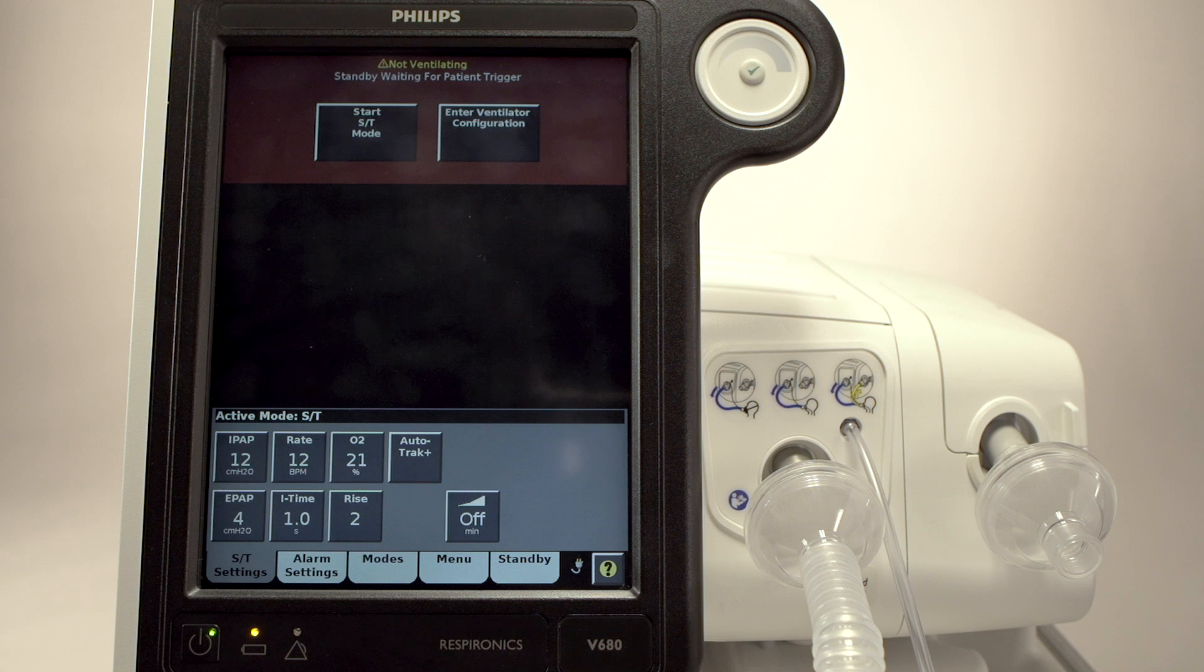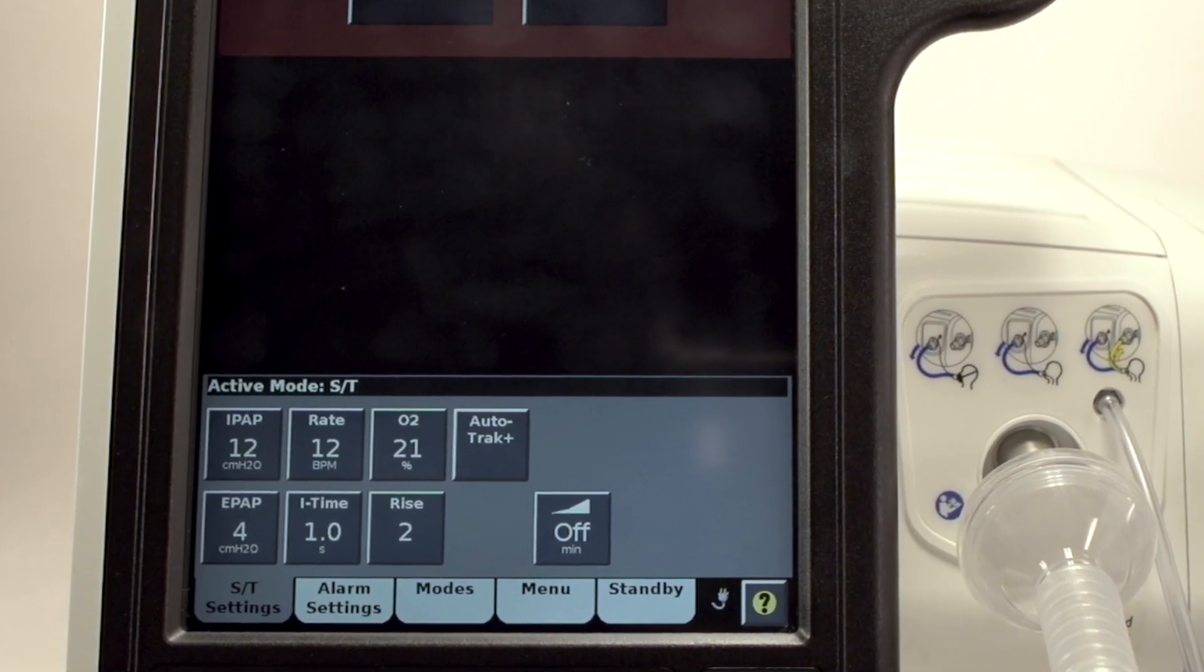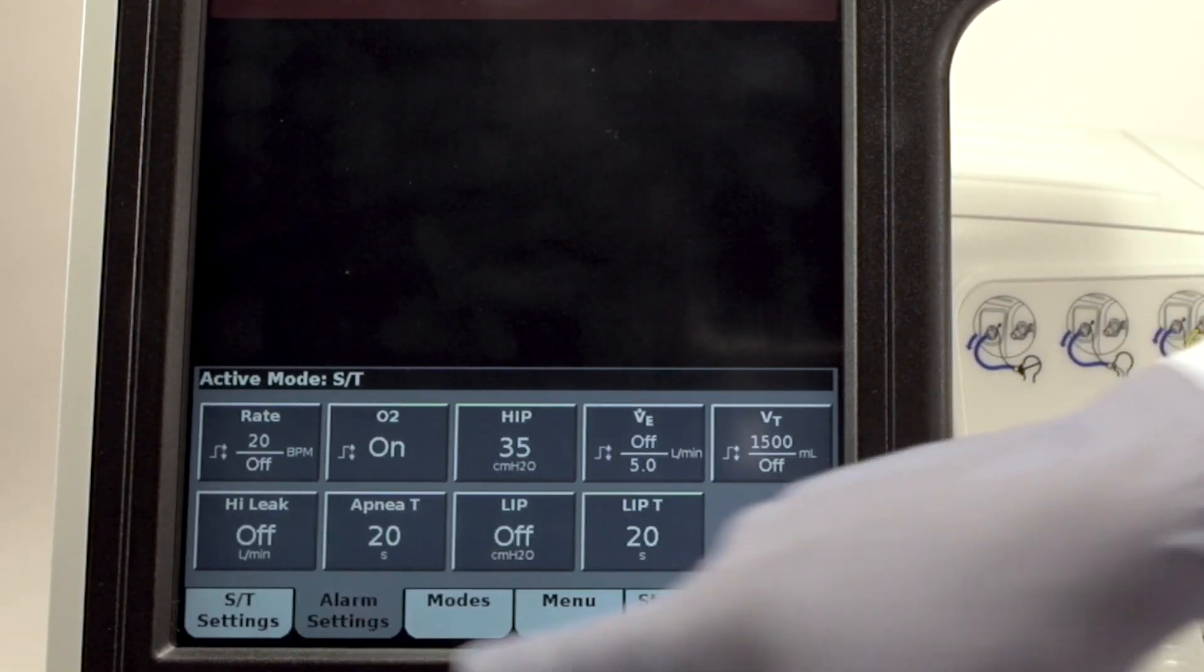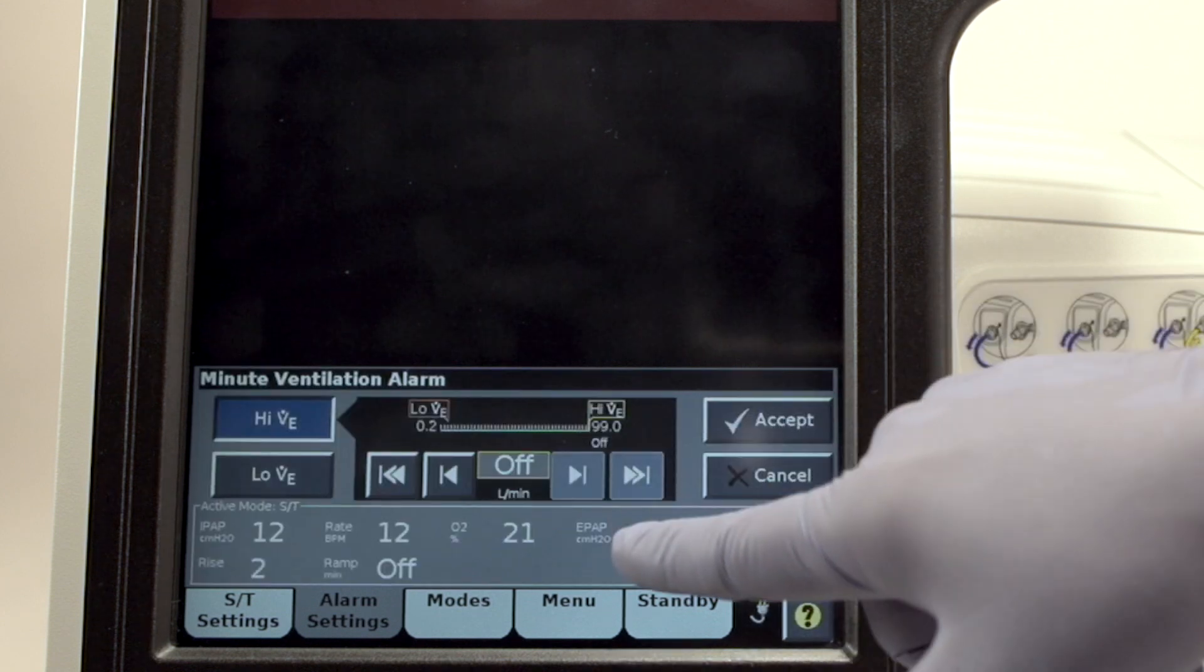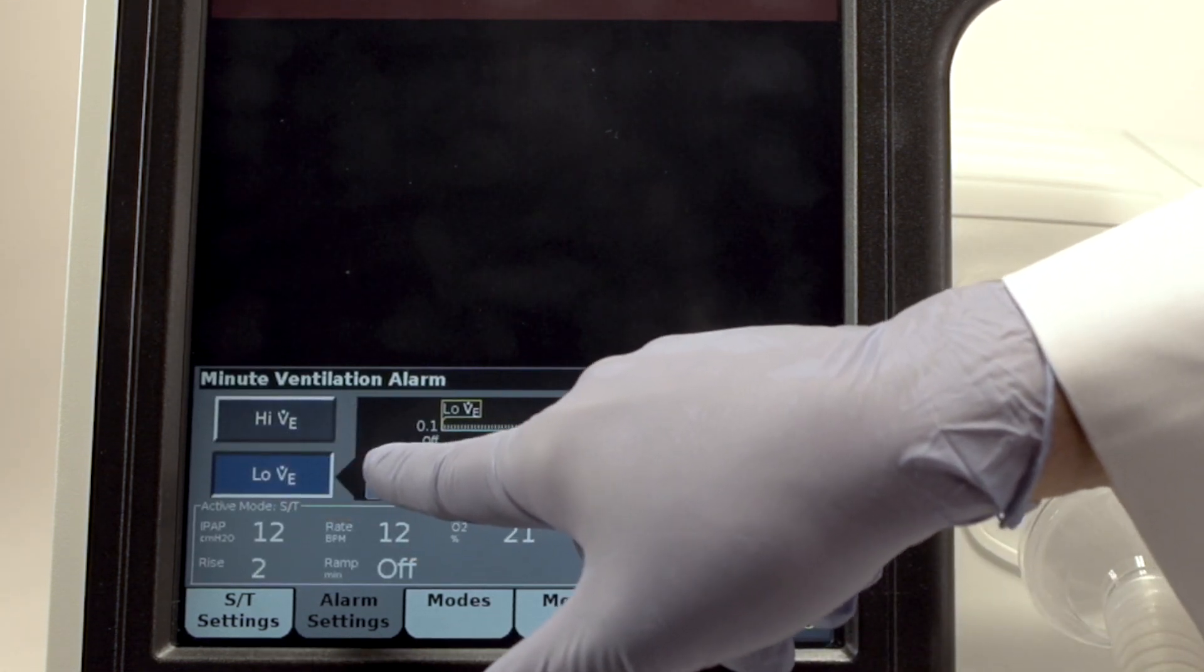Before ventilation commences, you can review all of your alarm settings and make appropriate adjustments. Let's fine-tune a few alarms. Simply touch the alarm and adjust the setting with the arrows. When you are ready, connect your patient and V680 will automatically start ventilating.